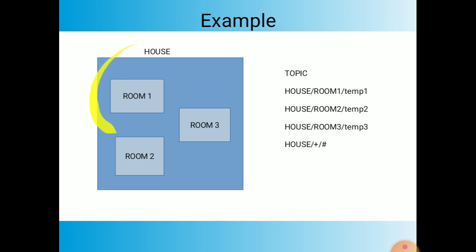Similarly, room 2 would be house/room2/temp and room 3 would be house/room3/temp. Suppose I want all the rooms' data. Then I write: house/+ — the plus wildcard covers all sub-branches of house, such as room 1, room 2, and room 3.